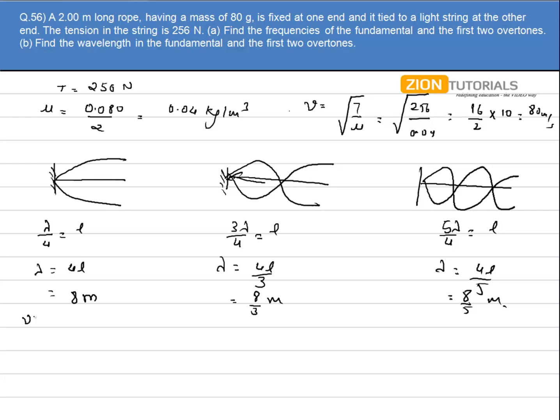Now nu into lambda is equal to velocity. So nu in each case will be 80 by 8. There it will be 80 by 8 by 3. And here it will be 80 by 8 by 5. So it comes out to be 10 hertz. It comes out to be 30 hertz. And here it comes out to be 50 hertz.